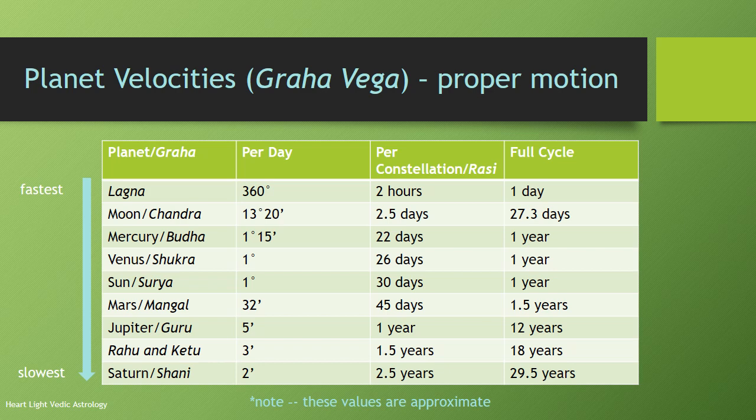Then we have the outer planets. Mars moves about half a degree a day — 32 minutes. It takes about 45 days, or a month and a half, to go through a constellation. Mars, because it's farther away from the sun, has a longer distance to go, so it takes longer — a month and a half. It takes about a year and a half to go through its full cycle and return to its natal position. Then there's Jupiter. It only moves five minutes a day, takes about a year to go through a constellation or rashi, and takes 12 years to go through its full cycle.